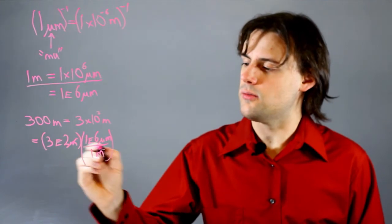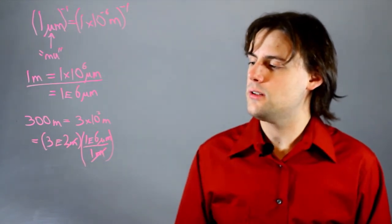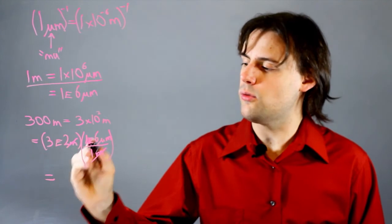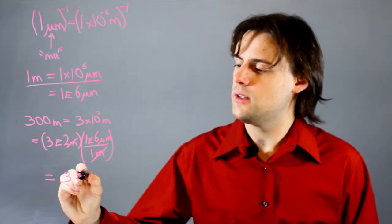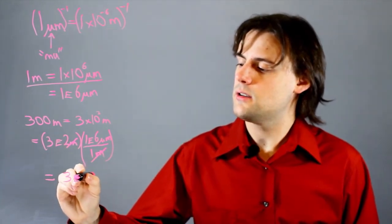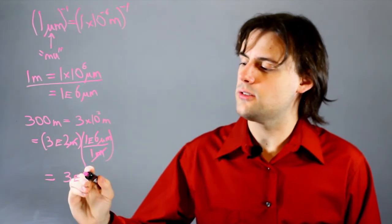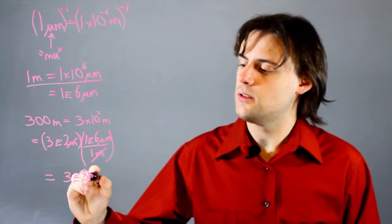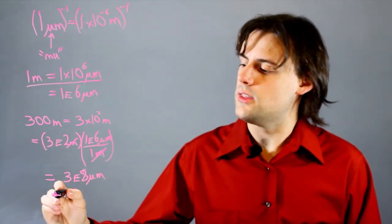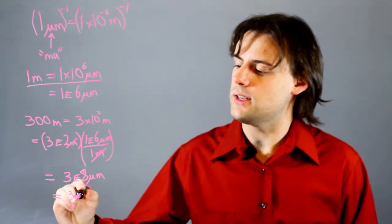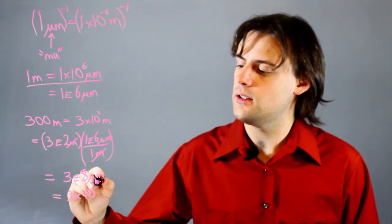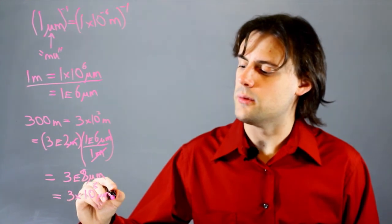The units of meters cancel out, and I'm left with 3 times 1, which is 3e2 plus 6, which is 8 micrometers. And this is finally simply equal to 3 times 10 to the 8 micrometers.